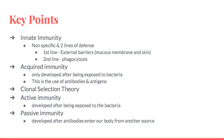To summarize: innate immunity is the nonspecific immunity with two lines of defense — the first being external barriers and the second being phagocytosis. Acquired immunity is only developed after being exposed to bacteria and relates to antibodies, antigens, B cells, and T cells. We also covered the clonal selection theory, active immunity (developed after exposure to bacteria), and passive immunity (developed after antibodies enter our body from another source).